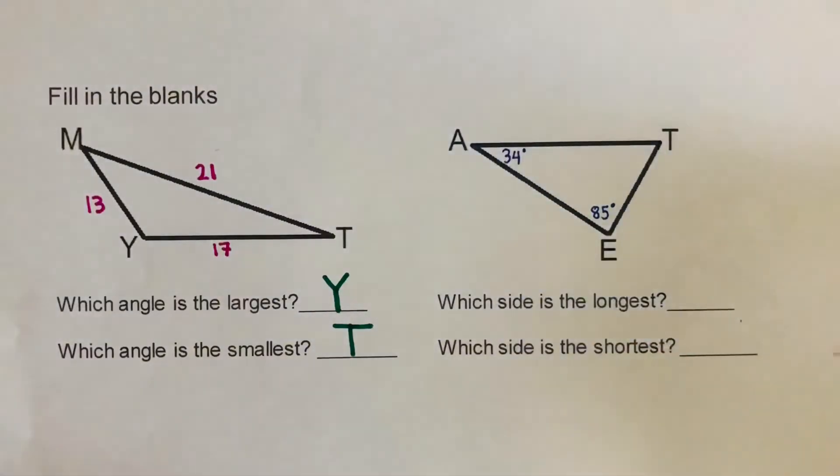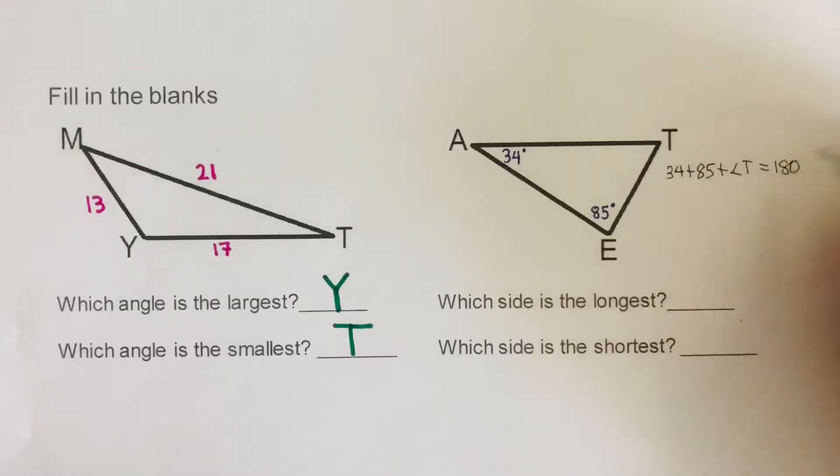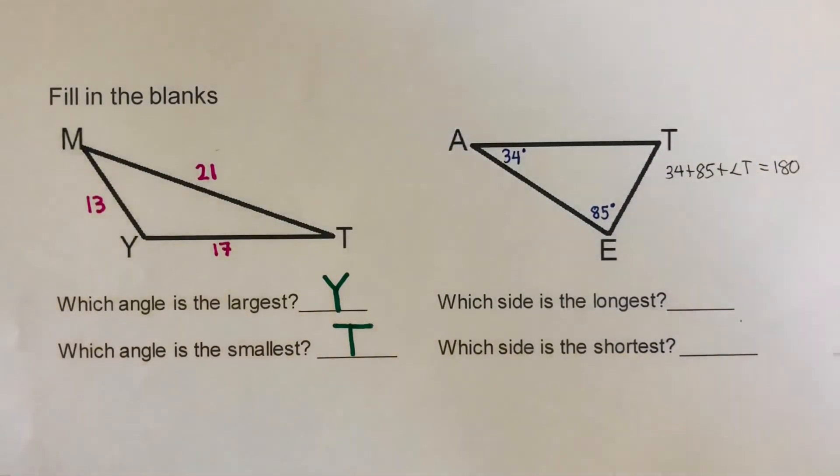So we can go ahead and solve for angle T. That would be 34 plus 85 plus angle T equals 180. And if we do the math here, this should equal 61.